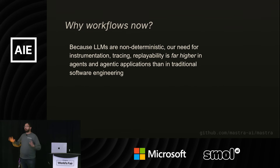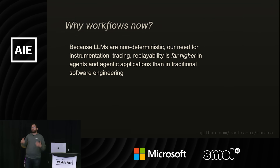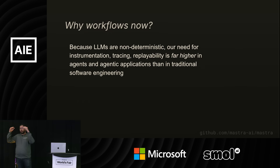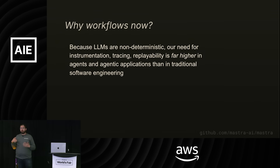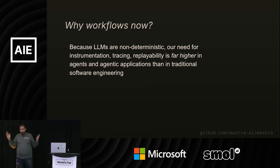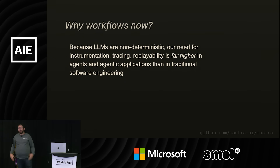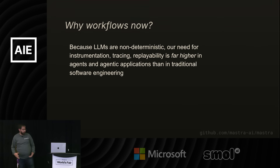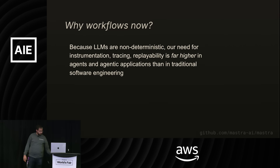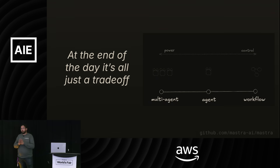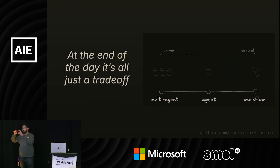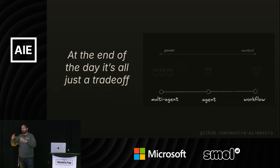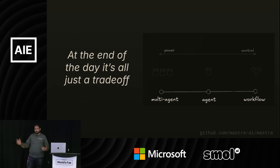Workflows have been around for a while and are becoming more popular now for various reasons, but one important reason is that non-determinism is core to what we're doing in AI engineering. Being able to trace what happened is important in software engineering, but it's 10x as important in AI engineering. At the end of the day, it's just a trade-off: you can have power or you can have control. You can decide which parts you want power on, which parts you want control on. You can start with power and then, for anything that goes off the rails, you can add control.